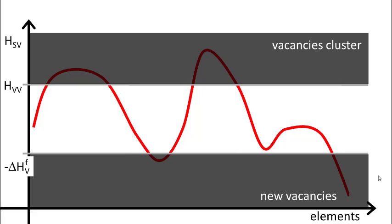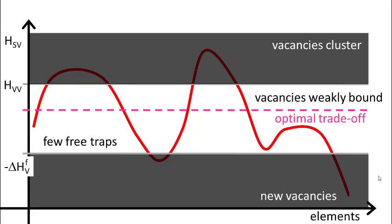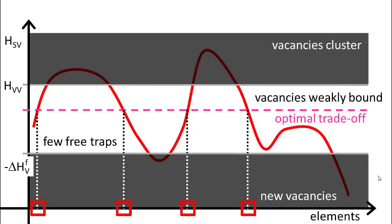The region that is white is the region where good trapping happens, but not every place there is equally suitable. If you are to the top of the white region, then the vacancies are only weakly bound, so preferably they should be stronger bound. And if you are at the bottom of the white region, there are only a few free traps available waiting for vacancies to capture. So somewhere in the middle, there should be an optimal trade-off between these two tendencies. And the elements, the impurities for which this optimal trade-off is reached, these are the good candidates that you would like to study experimentally.